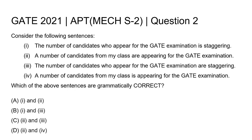All the options are in pairs, meaning 2 sentences from these 4 are grammatically correct. If we read the sentences, we can see that sentence 1 and sentence 3 are similar, and sentence 2 and sentence 4 are also similar. The only difference in each pair is the use of the verb 'is' versus 'are'.